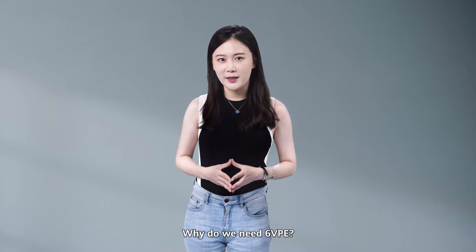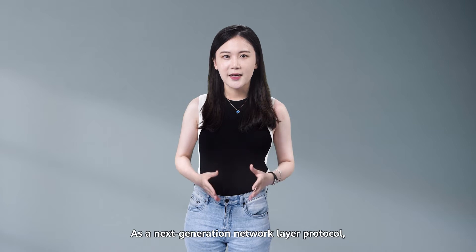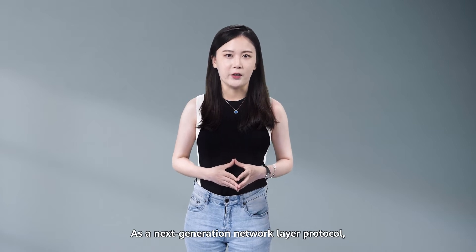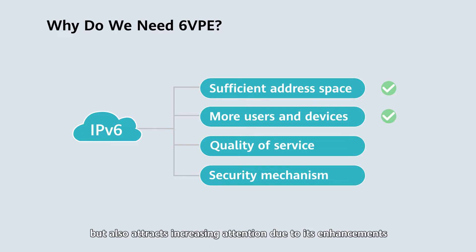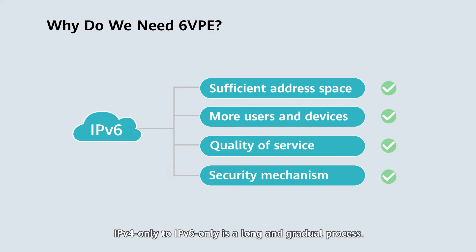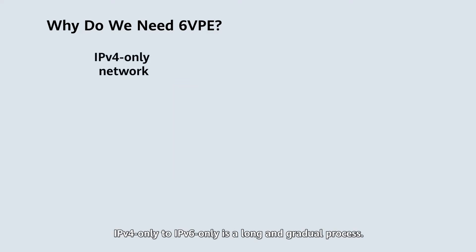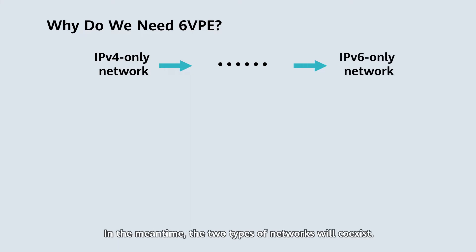Why do we need 6VPE? As a next-generation network layer protocol, IPv6 not only provides a vast address space to allow more users and devices to access the internet, but also attracts increasing attention due to its enhancements to service quality and security mechanisms. However, evolving networks from IPv4-only to IPv6-only is a long and gradual process. In the meantime, the two types of networks will coexist.